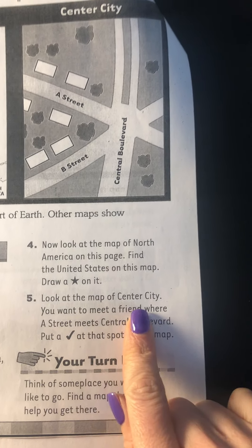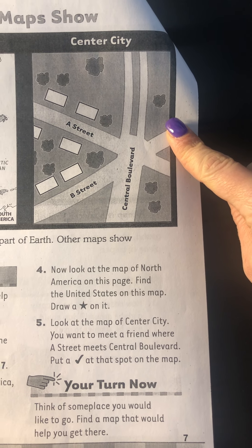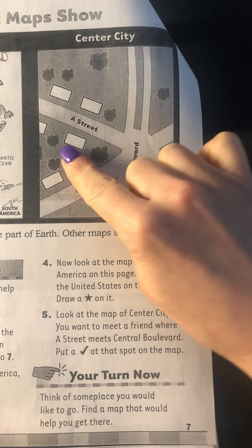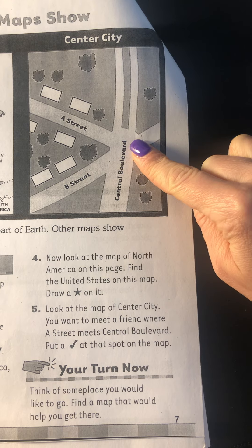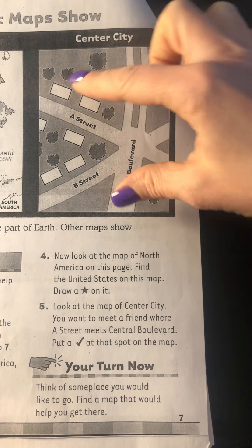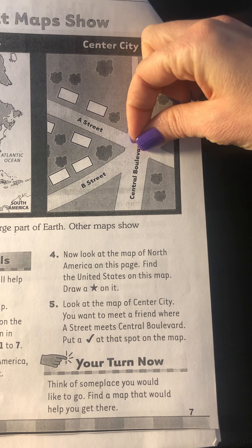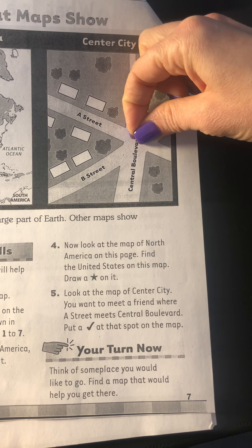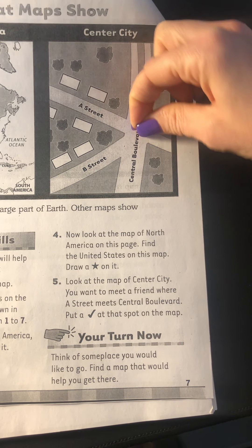Number five: look at the map of Center City. You want to meet a friend where A Street meets Central Boulevard. So this is A Street and this is Central Boulevard. Put a check at that spot on the map. So where do those two streets meet? I would take my fingers and slide them together until I find a meeting point, and then put a check at that spot on the map so you and your friend know where to meet.